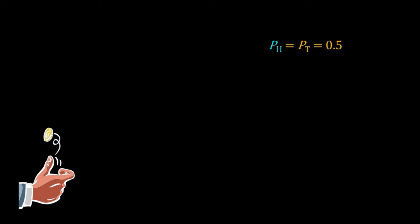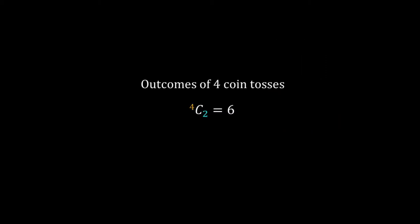A coin toss is stochastic. Take a fair coin and toss it four times. What is the probability of getting two heads in four tosses? This is a problem of combinations.